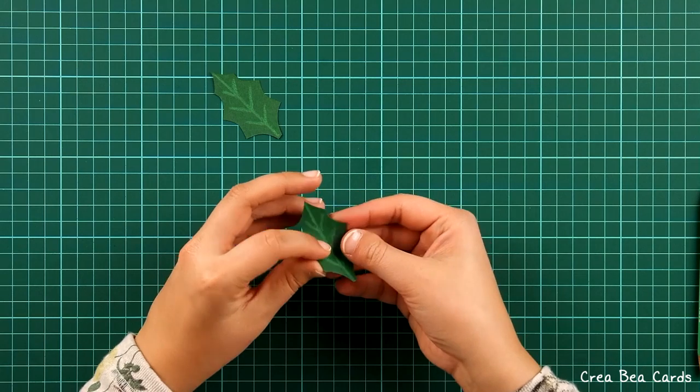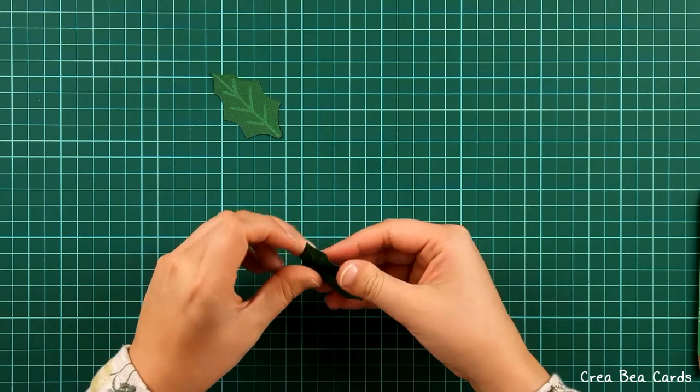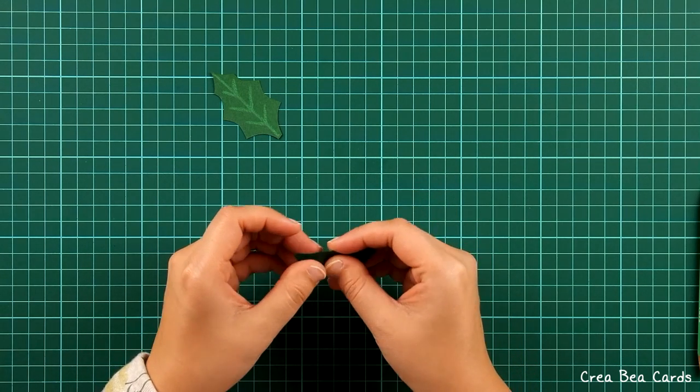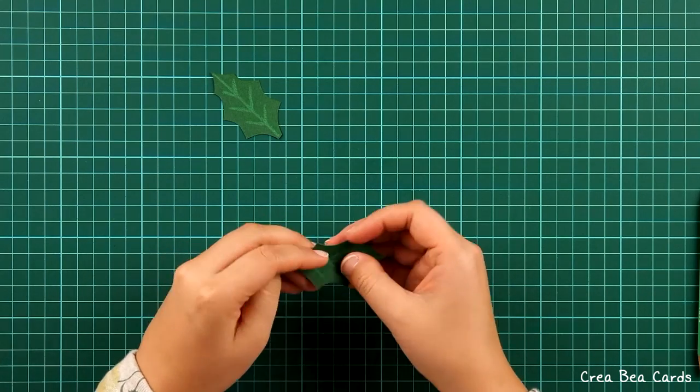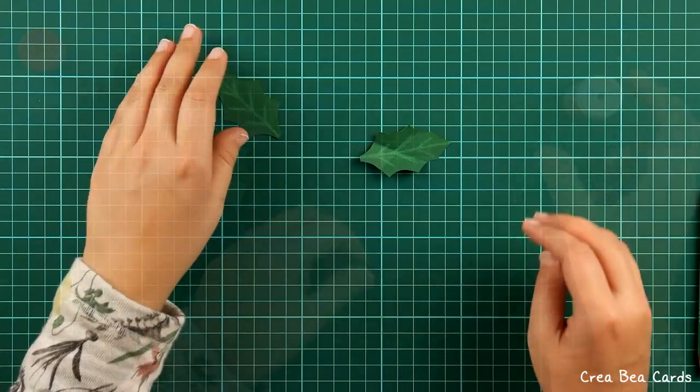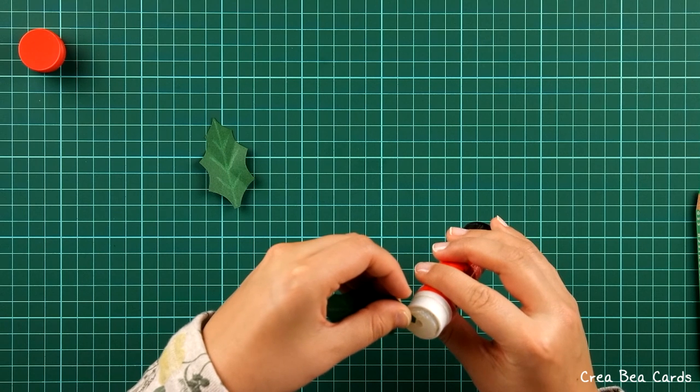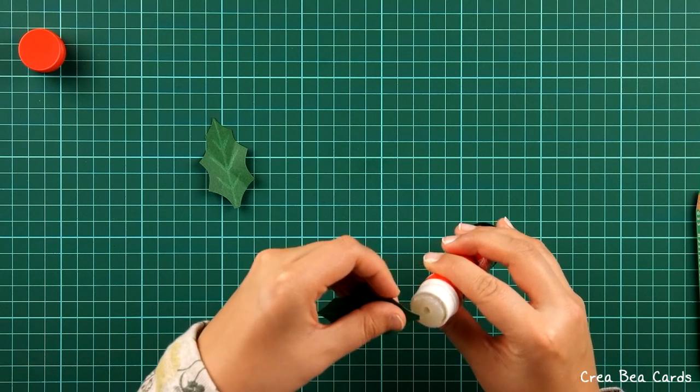Fold each leaf twice diagonally to make it look more real. Attach the leaves to each other with glue. This will allow you to adjust the leaves a bit before the glue is completely dry.